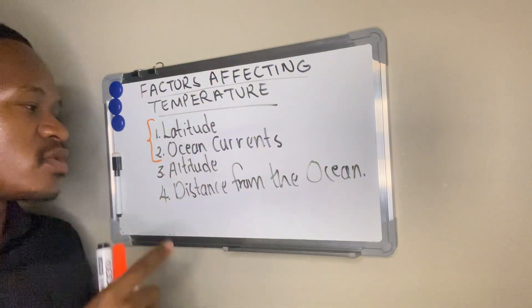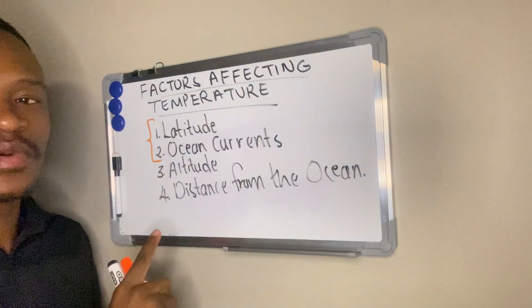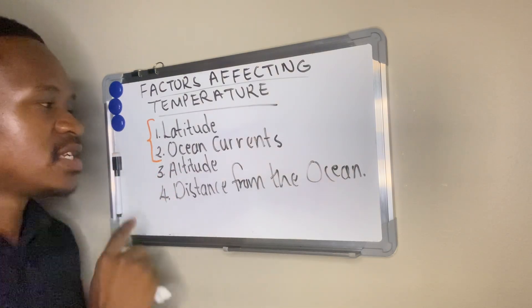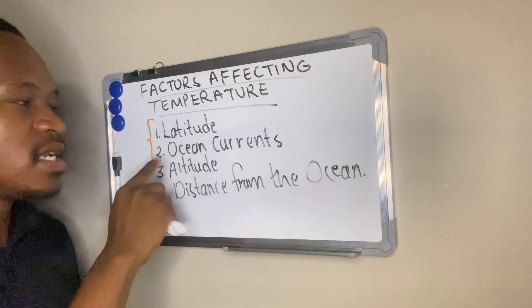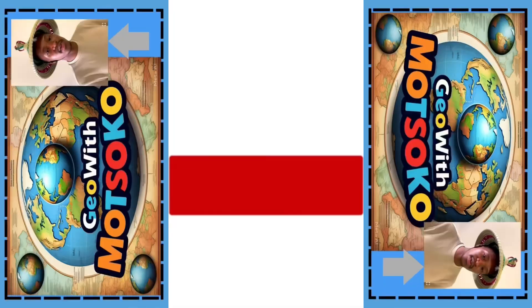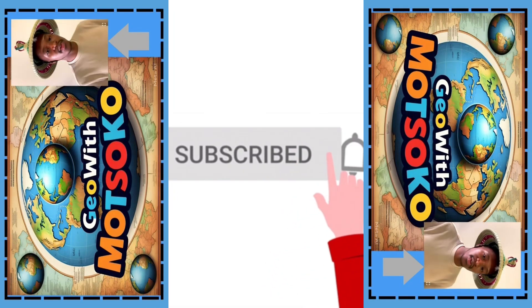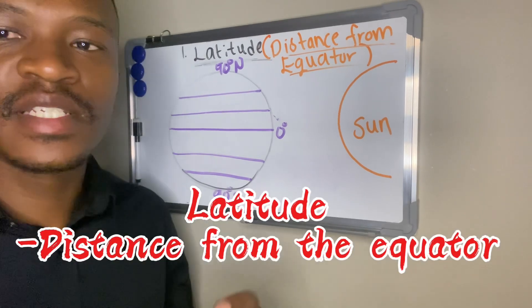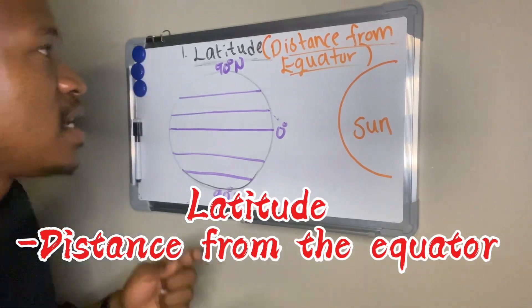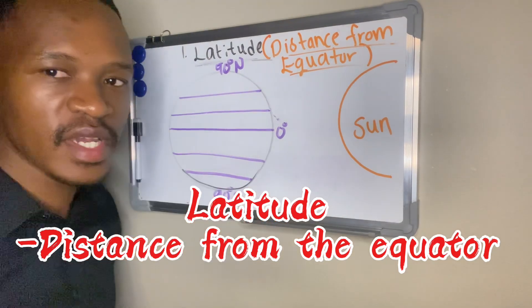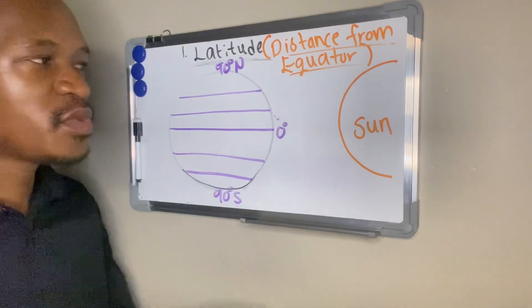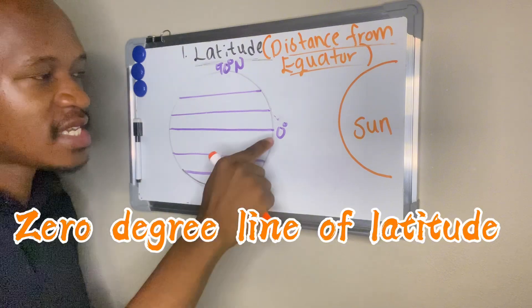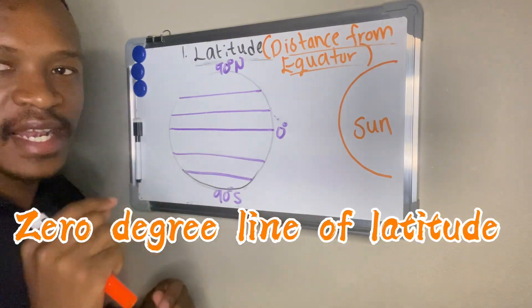In my next video, I will do altitude and distance from the ocean. Now let's do the first two: latitude and ocean currents. The first one is latitude. Most of you may know it as distance from the equator, because the equator is a line of latitude — it is the zero-degree line of latitude.